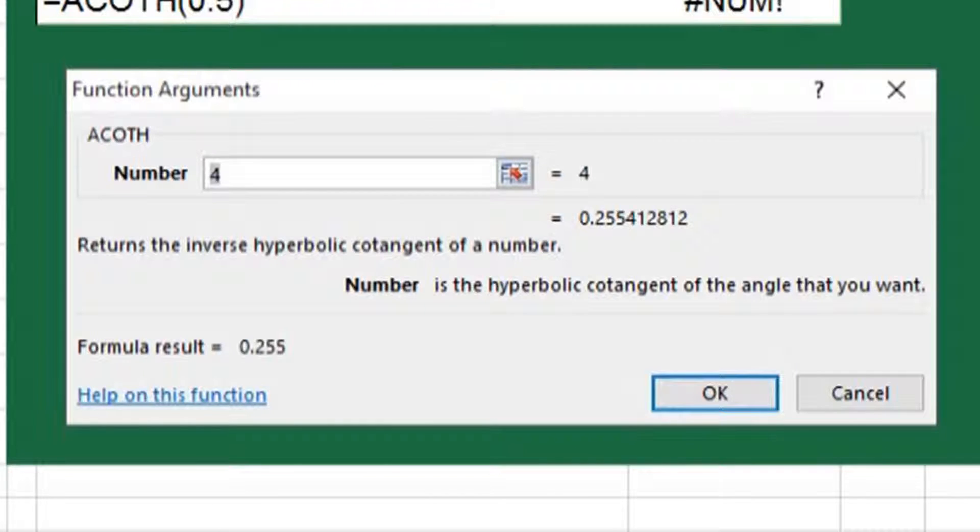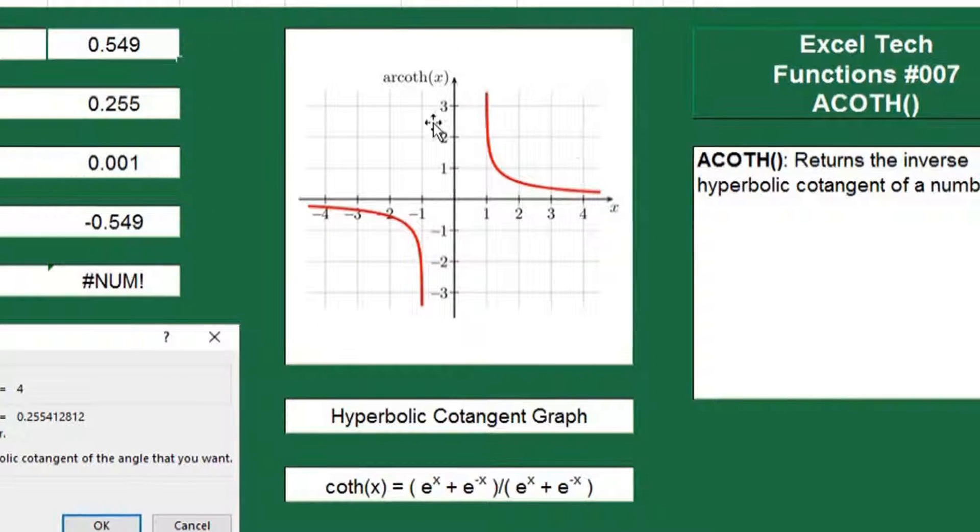Basically what that means is we're going to use the inverse cotangent to find the intersecting coordinates on a cotangent graph. To produce this hyperbolic cotangent graph you will use the formula coth x equals e to the x plus e to the negative x over e to the x plus e to the negative x.